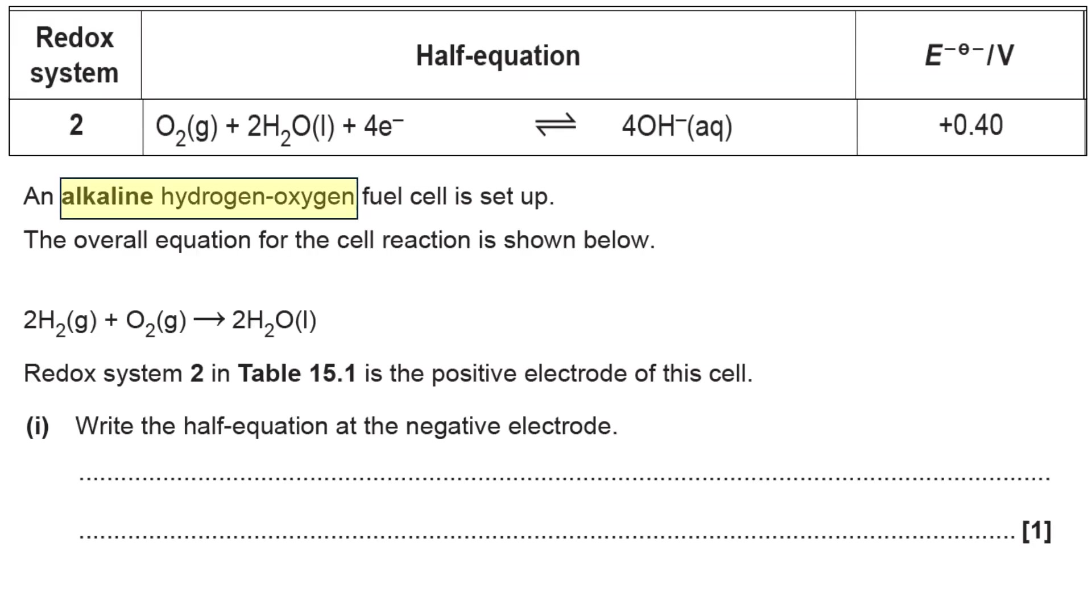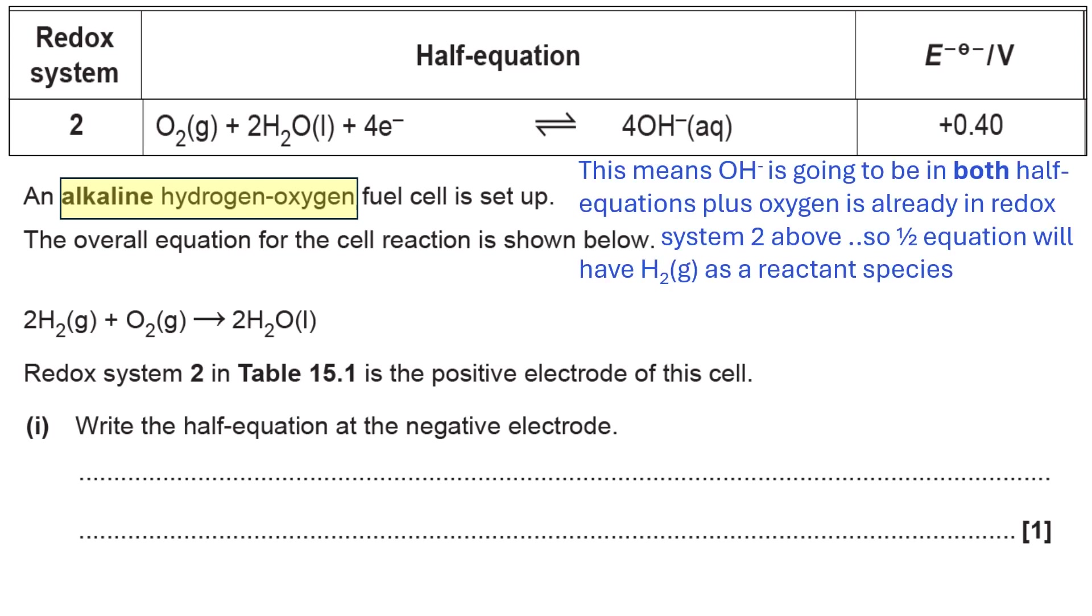So first of all it tells you that an alkaline hydrogen oxygen fuel cell is set up. So they give you obviously the oxygen half equation and obviously the fact is alkaline means that OH- is going to be involved in both half equations.